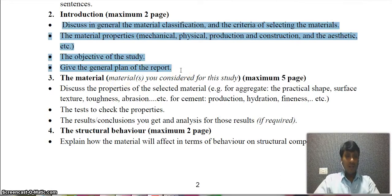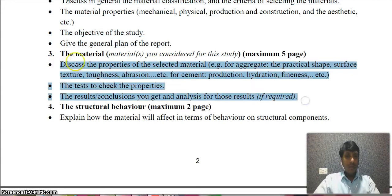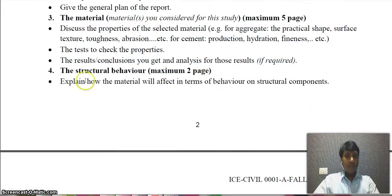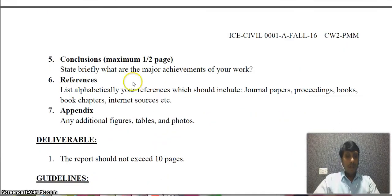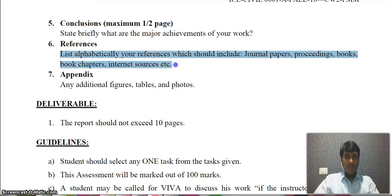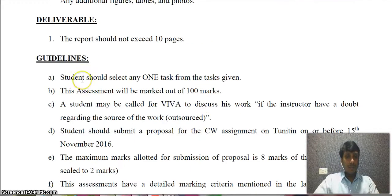In the materials section, discuss the properties of the selected material — for example, for coarse aggregate: particle shape, surface texture, toughness, and abrasion. Include what tests were conducted, results, calculations, observations, graphs, and analysis. The structural behavior section should discuss how the material affects structural components. In conclusions, briefly state the major achievements of your work. For references, follow Harvard style, list alphabetically, and use appendices for additional figures, tables, and photos. The report should not exceed 10 pages.